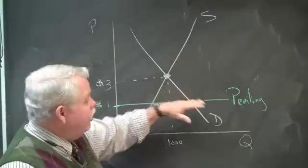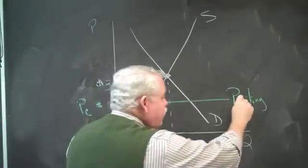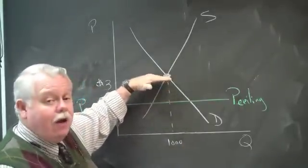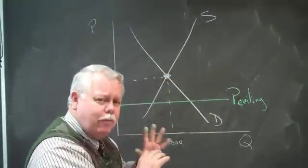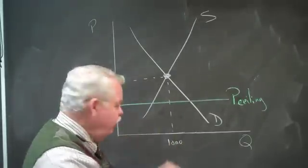And notice that when the price ceiling is below the equilibrium price, that's when we get some problems. Because the price is not allowed to rise to its equilibrium, we have to look to each curve separately at this price and say, what's going on? For example,